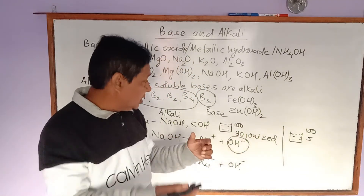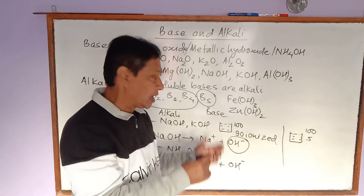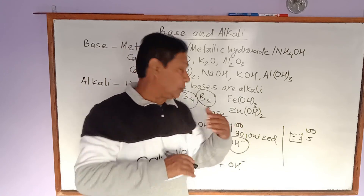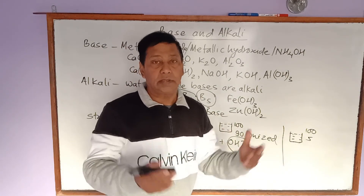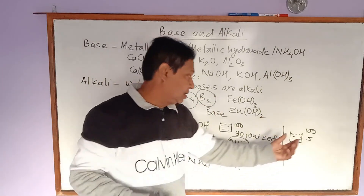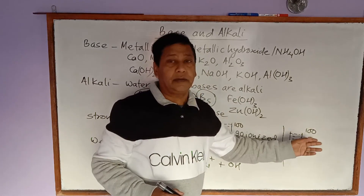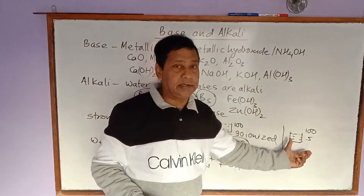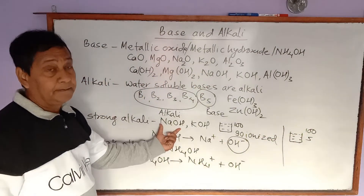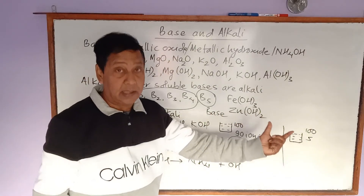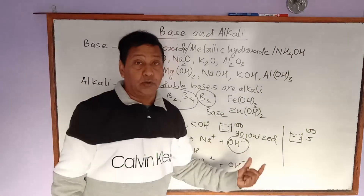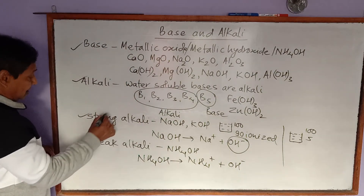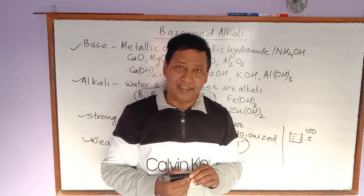We should also remember that for a strong alkali, on dilution — adding more and more water — the remaining molecules also start to ionize, so almost all molecules eventually ionize. But for a weak alkali, even with more water, a large number of molecules never ionize. To summarize: sodium hydroxide and potassium hydroxide are strong alkalis, while ammonium hydroxide and calcium hydroxide are weak alkalis.